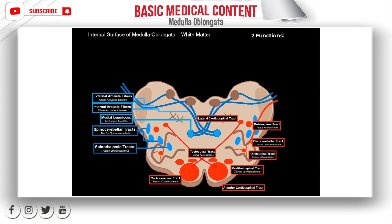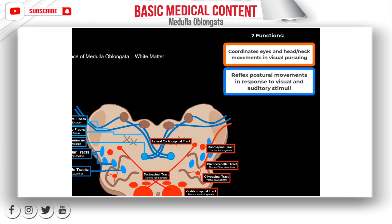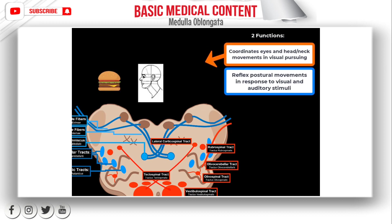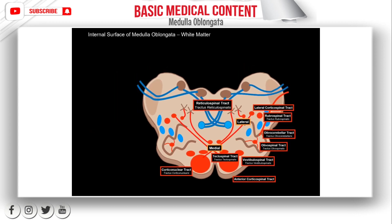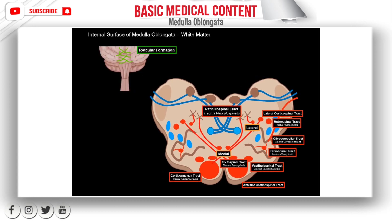The next tract is the tectospinal tract. It transmits motor impulses for the eyes and neck muscles, coordinating them when you look at something — imagine looking at a hamburger passing by and your neck muscles follow your eyes. It's called the tectospinal tract because it comes from the tectum of the midbrain, on its posterior surface. This one is also extrapyramidal, so it unconsciously moves your neck muscles with your eyes. Then we have the lateral and medial reticulospinal tracts, which are also part of the balance and posture system. They come from the reticular formation inside the brainstem, responsible for sleep, alertness, cardiovascular control, breathing, and also motor control like balance and posture.